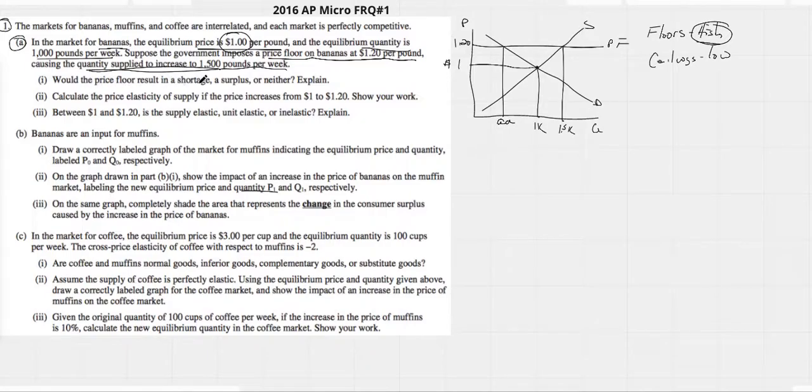So now, would the price floor result in a shortage, a surplus, or neither? Looks like quantity supplied is greater than quantity demand, so that's definitely a surplus. So, quantity supplied is greater than quantity demand.